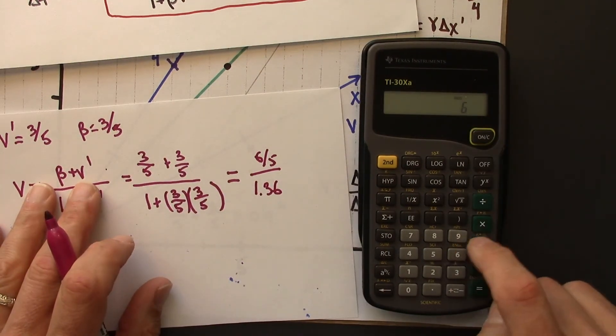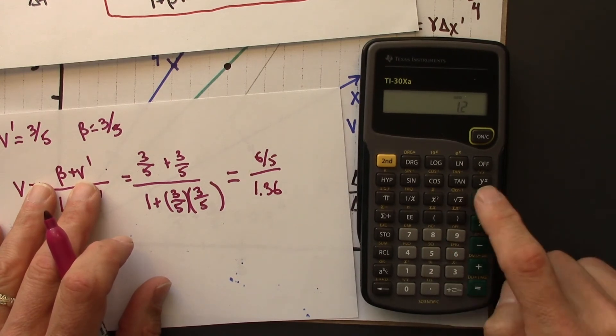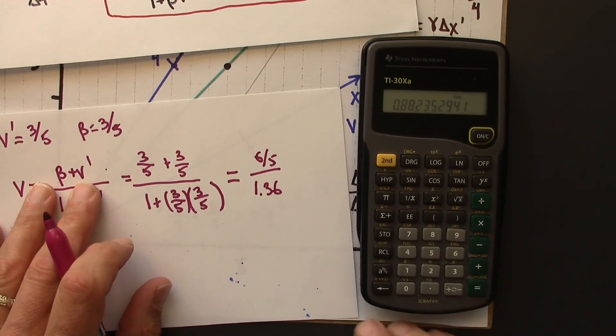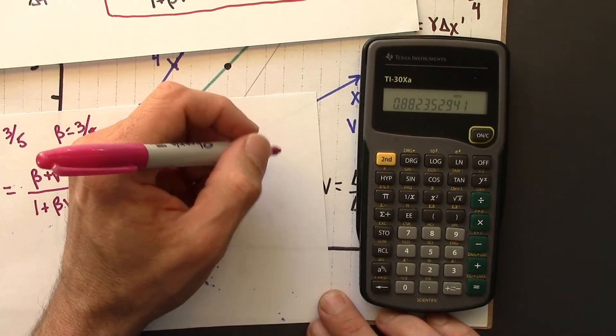Alright, let's see what we get. 6 divided by 5. Then divide that by 1.36. And we get 0.88.